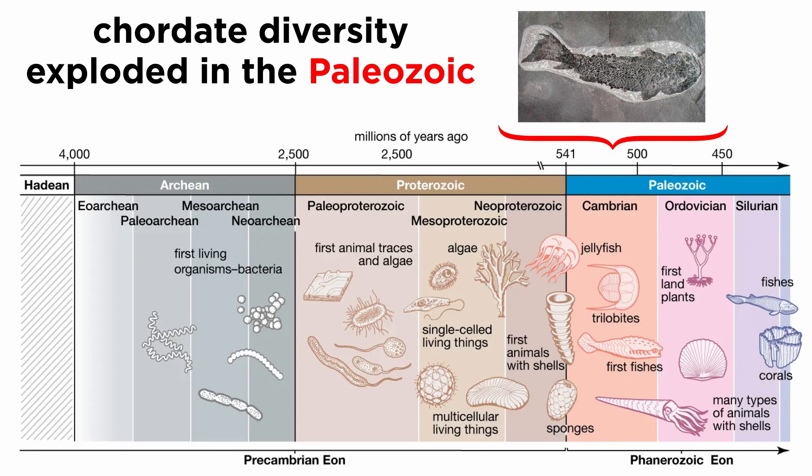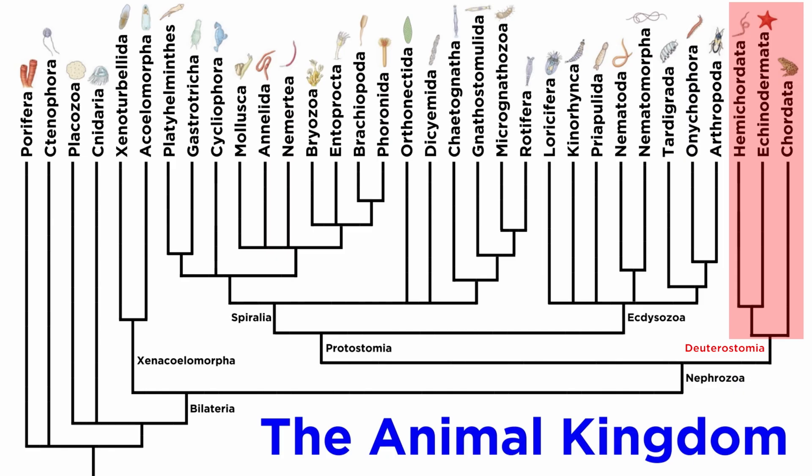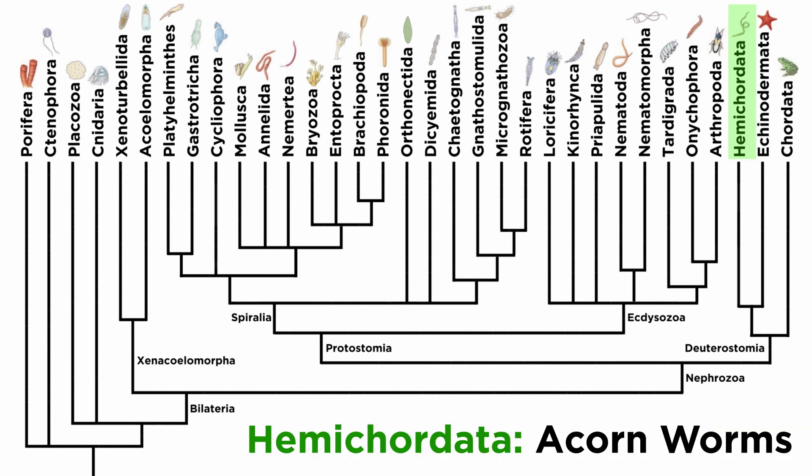Some of the oldest chordate fossils, for example, date back over 500 million years, and their diversity exploded in the Paleozoic, most notably with the armored ostracoderms. With all of this understood, it remains the case that there are three extant phyla within deuterostomes: the echinoderms, the hemichordates, and the chordates. We will save chordates for last, since it's such a diverse clade. For now, we can begin by examining the hemichordates, so let's move forward and check out the acorn worms.